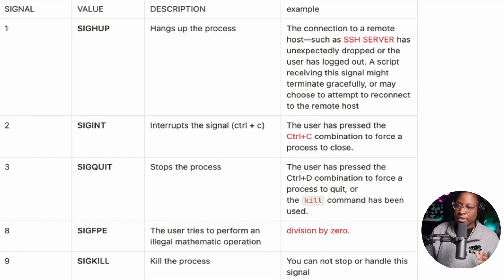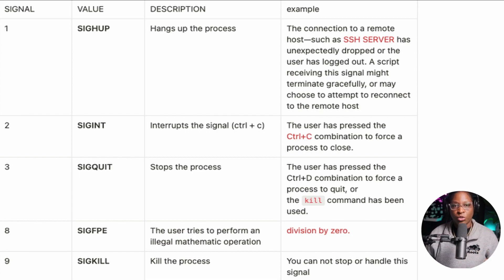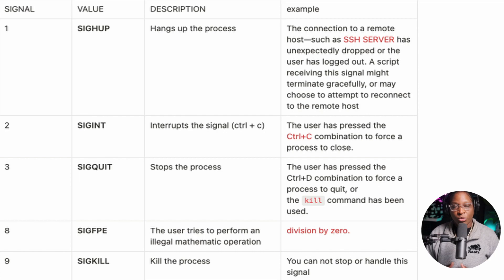The SIGINT signal is the interrupt signal in Linux, also known as the death of process. It is activated when the user presses Ctrl+C to terminate a program. You also have the SIGQUIT signal, referenced with numeric value three. The SIGQUIT signal is used to stop the process — for example, when the user presses Ctrl+D to force a process to stop, or when you use the kill command.